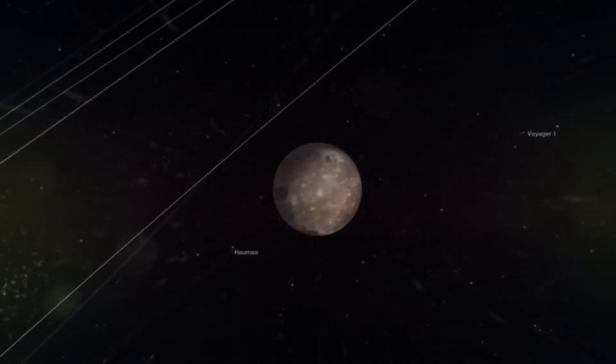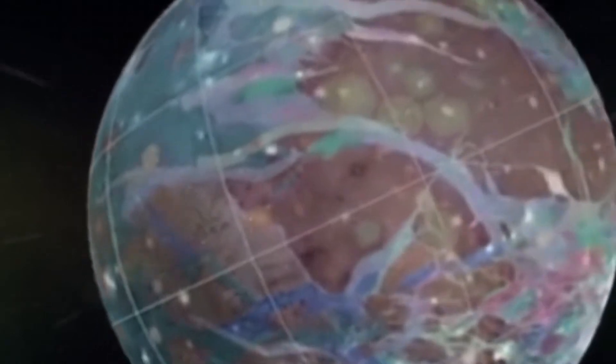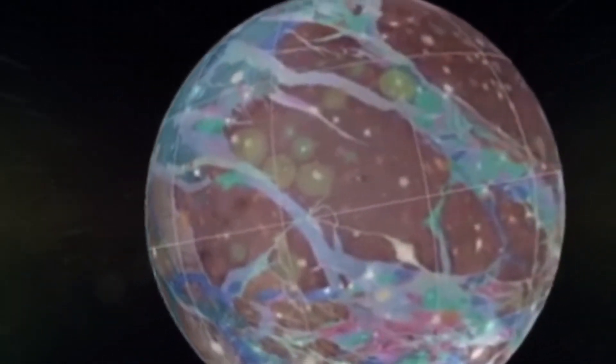The tectonic plates on Ganymede, large chunks of ice, could have moved and collided in the past, forming faults and mountains.